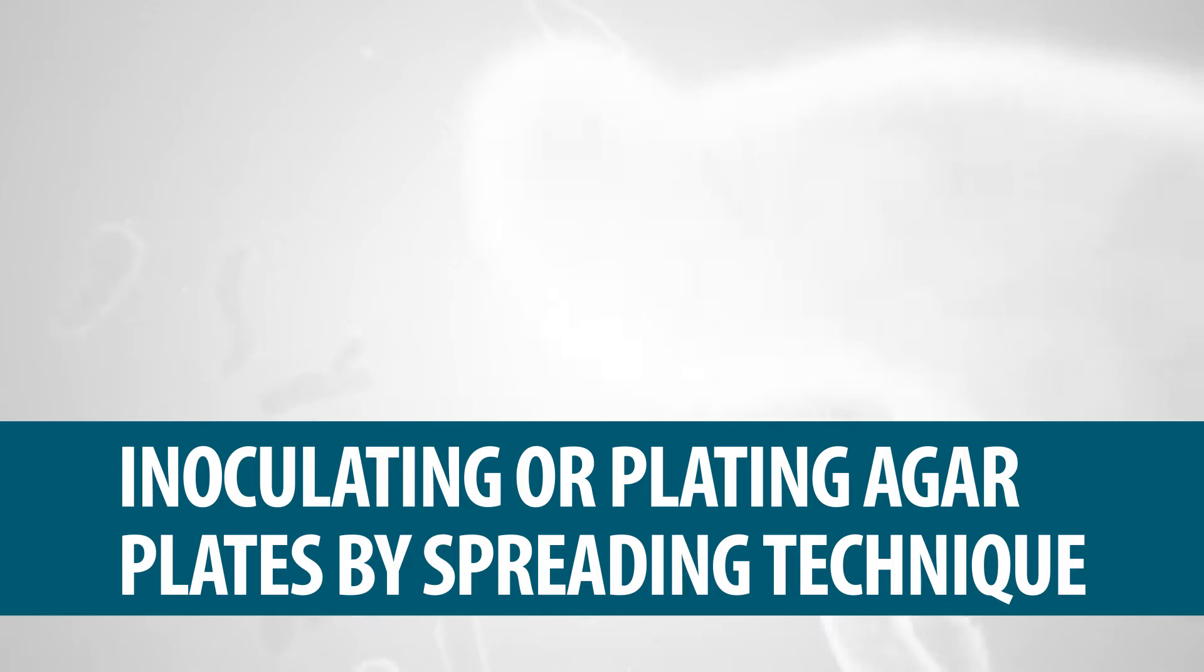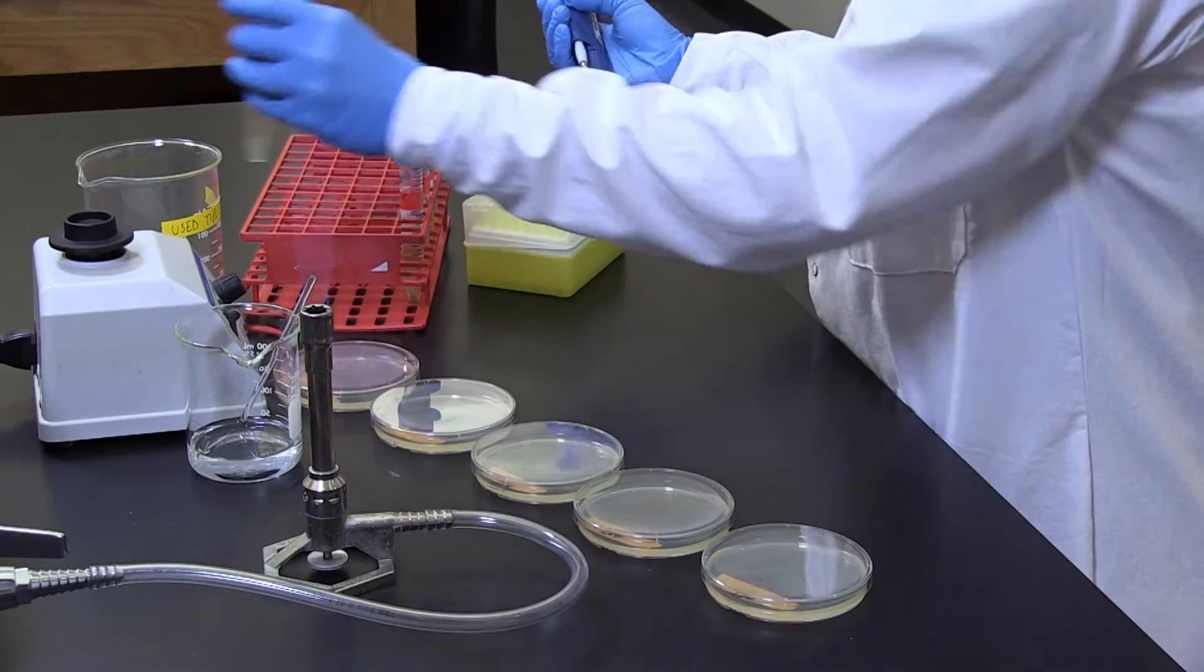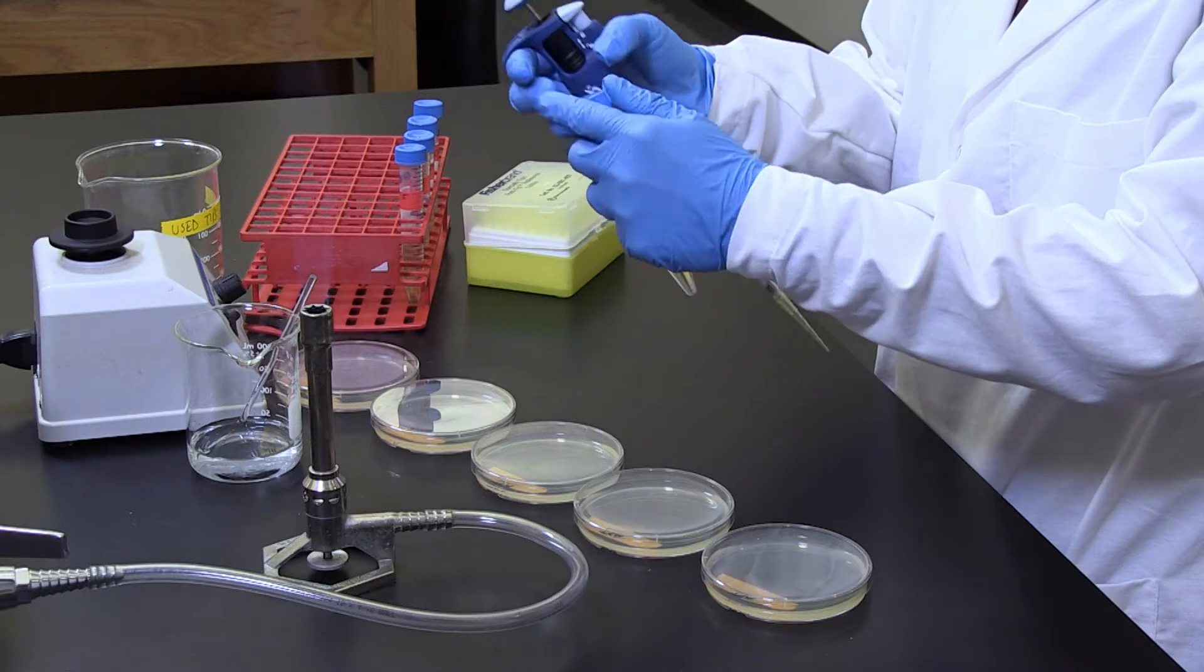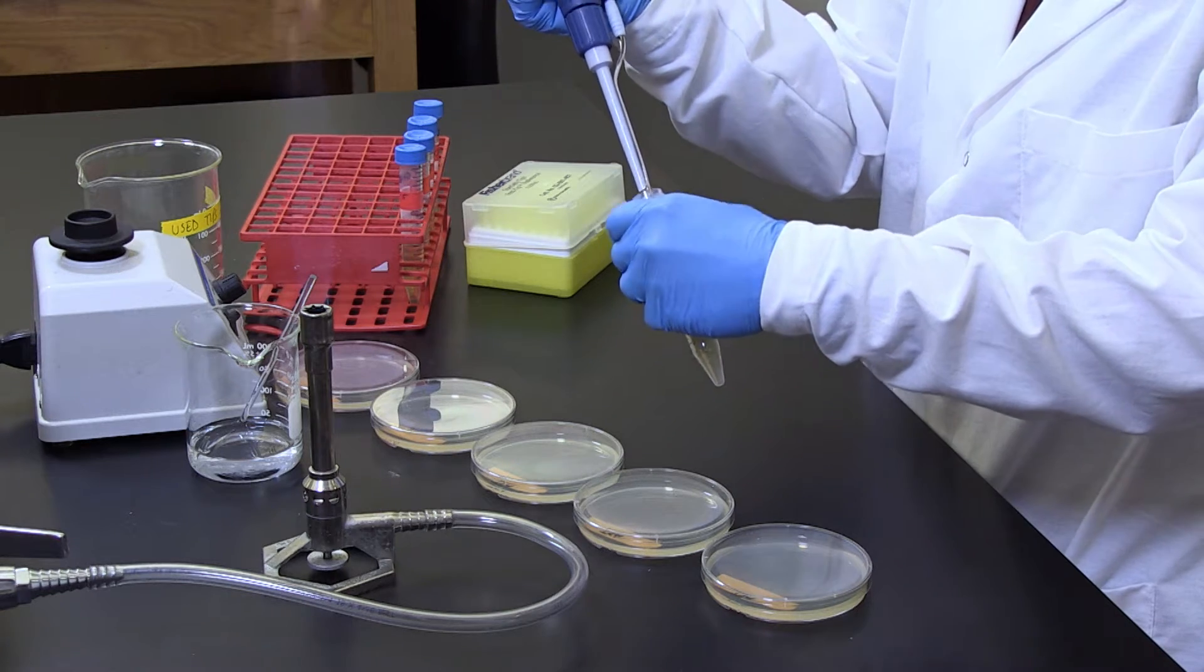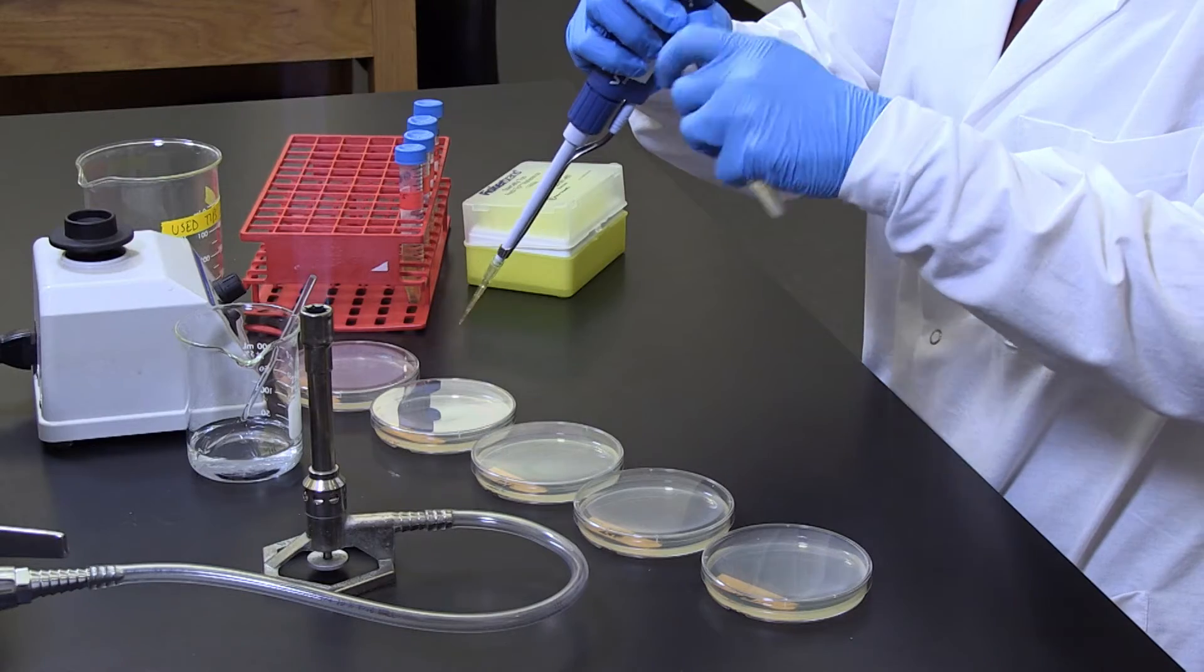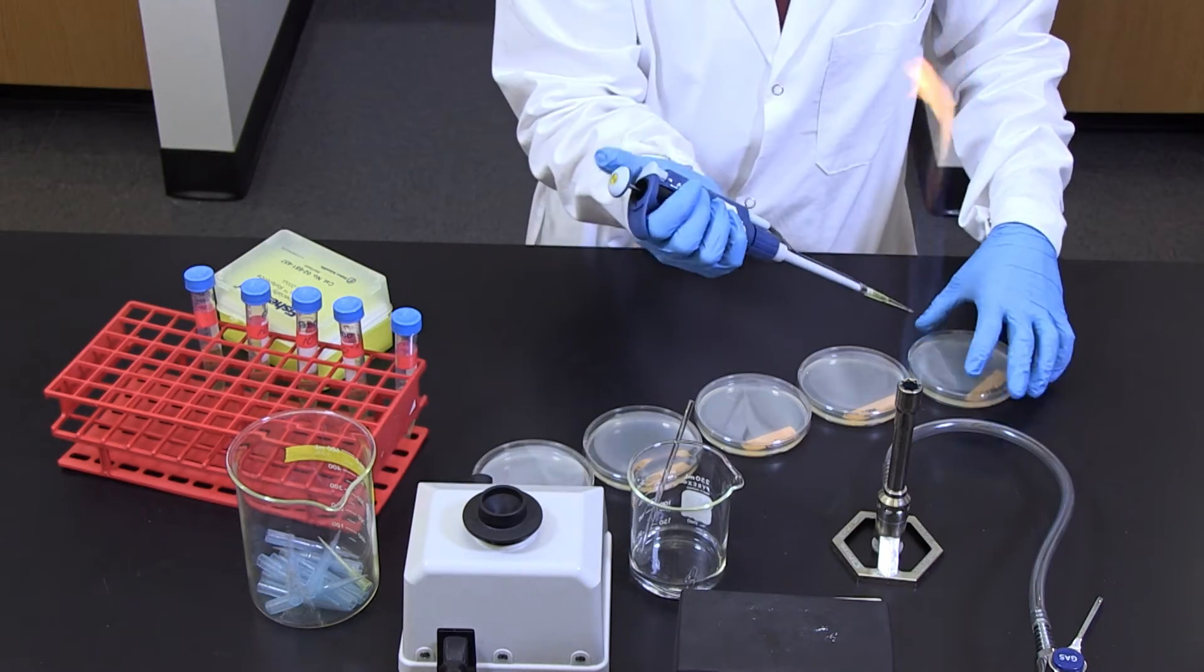Inoculating or plating the agar plates by spreading technique. The next step is to plate or inoculate the agar plates with the dilutions just produced. Apply aseptic technique and start with the diluted sample in the test tube labeled ten negative four. Transfer 0.1 milliliter or 100 microliters of this solution into the agar plate labeled ten negative five.